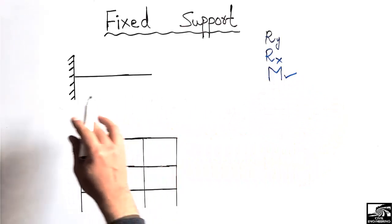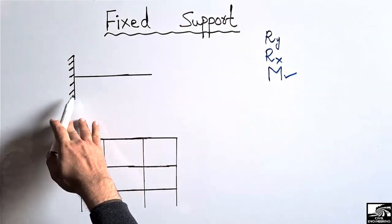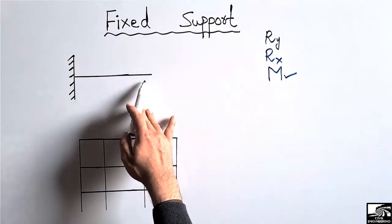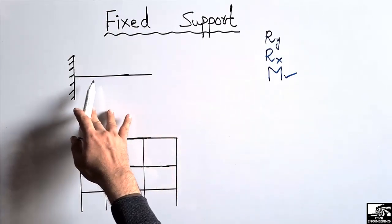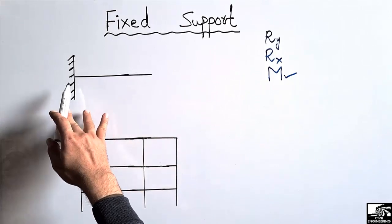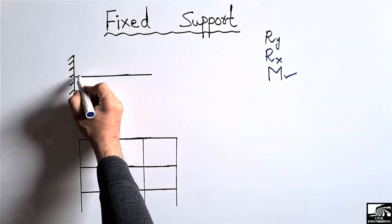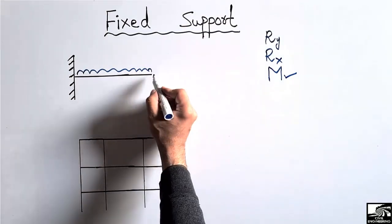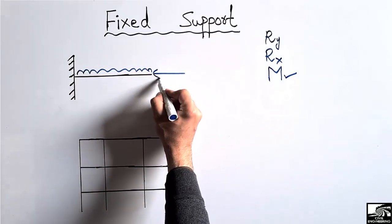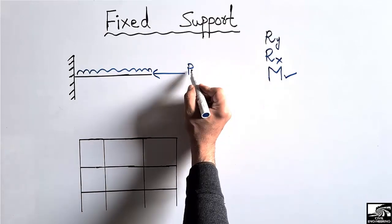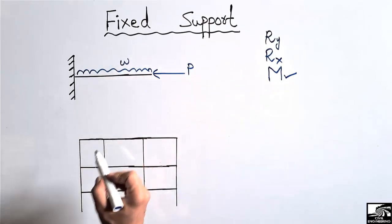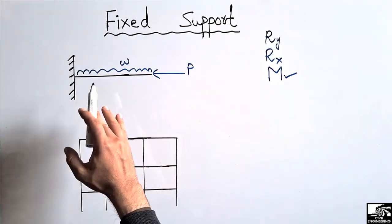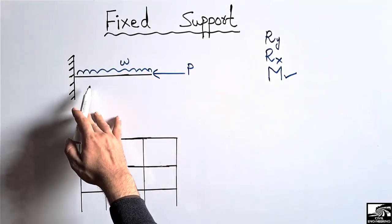Consider a cantilever beam — one end is a fixed support while the other end has no support. This is the most commonly used example for fixed support. Now consider a vertical load acting on this beam, a horizontal load P acting on this beam, and a uniformly distributed load. Due to these loads, reactions will be produced inside this beam at the fixed support.